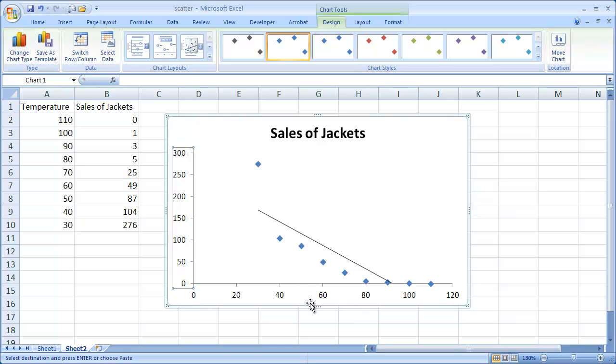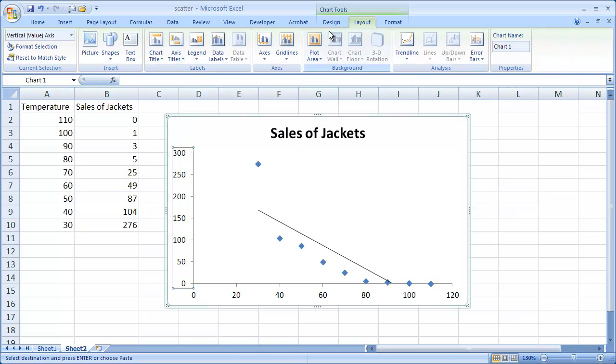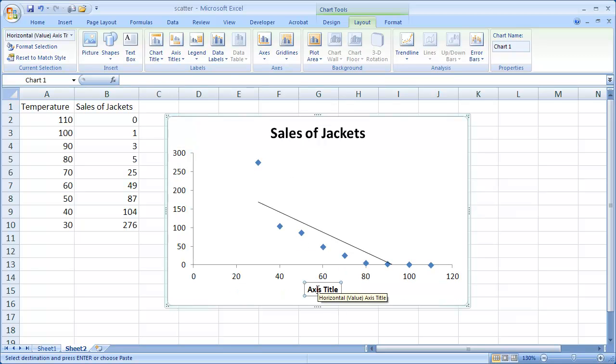So we will probably also want to add the labels for each of the axes. So we can go under Layout, Axis Titles, Horizontal, and that's going to give this one. This is our temperature, so we used to go from zero to 120 right now. So you can see we have our value here, 110 to zero, and also 100, and this is a one.